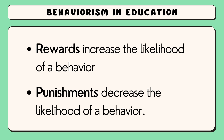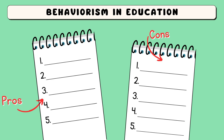The theory underpinning behaviourism is simple: rewards increase the likelihood of a behaviour, while punishments decrease the likelihood of a behaviour. The most important thing to remember is that behaviourism has both benefits and limitations, so we need to know when to use it and, importantly, when not to use it.